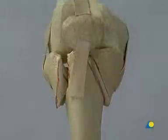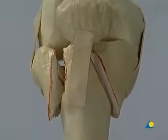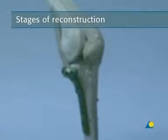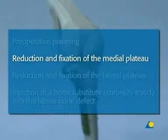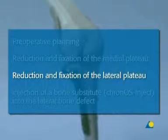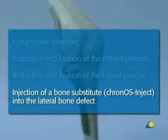The model shows a large bone block medially and considerable comminution laterally. Stages of reconstruction: preoperative planning; reduction and fixation of the medial plateau; reduction and fixation of the lateral plateau; injection of the bone substitute Kronos inject into the lateral bone defect.